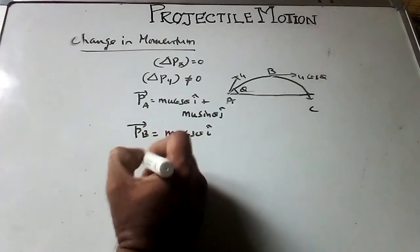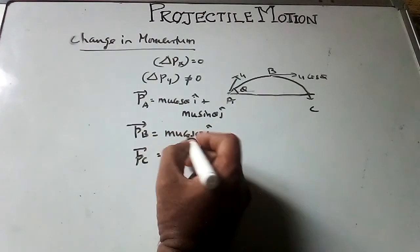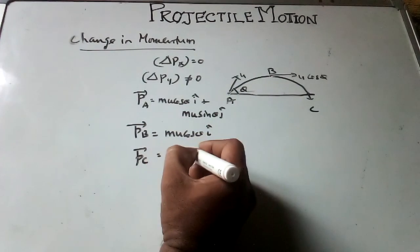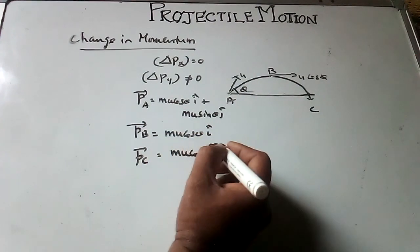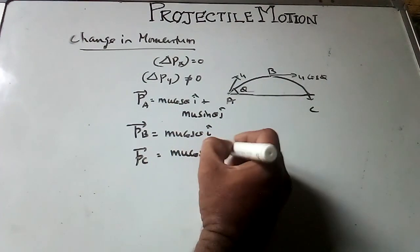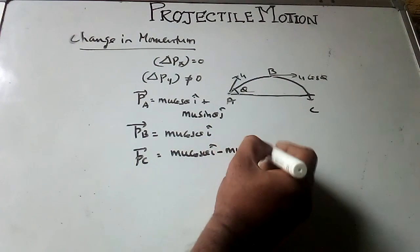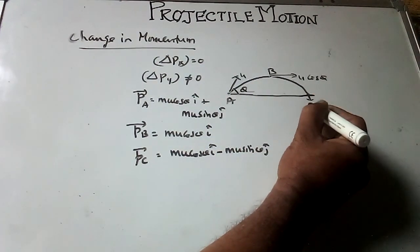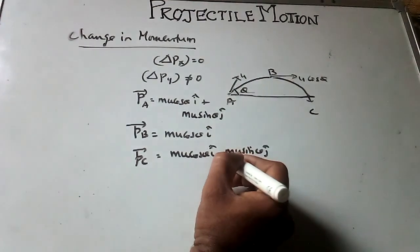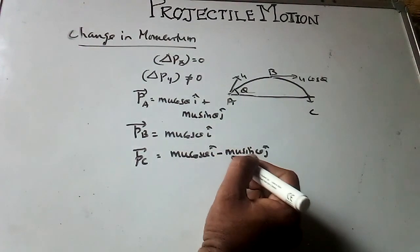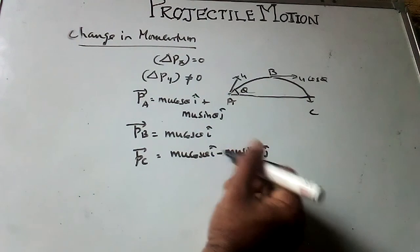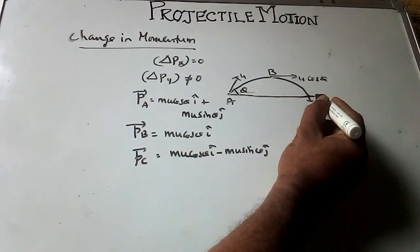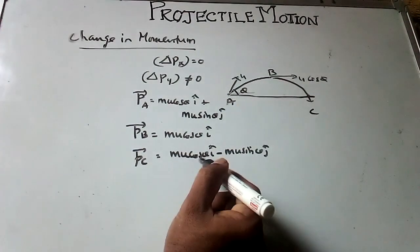And at C, momentum at C is mu cos theta i cap minus mu sin theta j cap, since it basically is towards negative y-axis. That is why minus j cap. So minus mu sin theta j cap. Here horizontal velocity is there along x-axis, that is mu cos theta i cap.